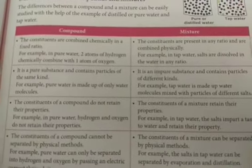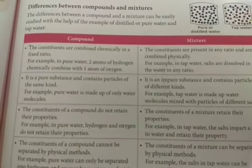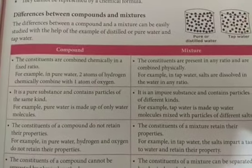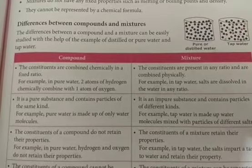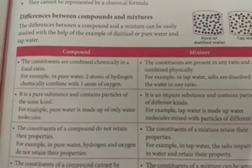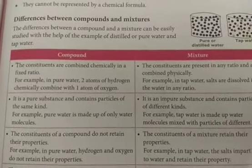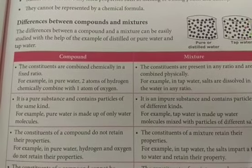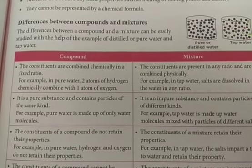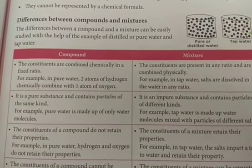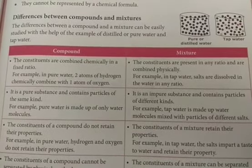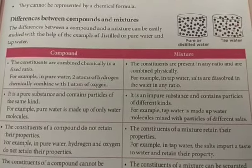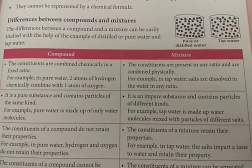On page number 35 there is a table which is a sort of revision. Let us see the differences between compounds and mixtures. In compounds, the constituents are combined chemically in a fixed ratio. For example, in pure water, two atoms of hydrogen combine chemically with one atom of oxygen — always a 2:1 ratio with reference to hydrogen and oxygen.